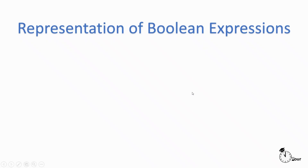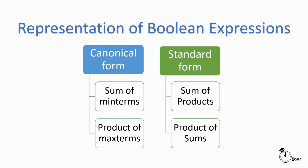Hello everyone, welcome to Learning at Leventar. This video is going to be about the different representations used for representing Boolean expressions. You have basically two ways: one is the canonical form, the second is the standard form. The canonical form can represent the Boolean expression as sum of min terms or as product of max terms, and the standard form can represent it as sum of products or product of sums. Let's dive into each of these so we get a clear understanding and learn how to convert from one form to another.